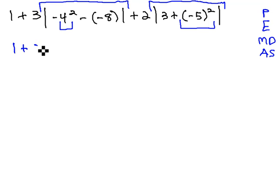So, we now have 1 plus 3, absolute value of the opposite of 4 squared, which is 16, minus negative 8, plus 2, absolute value of 3 plus, and now we square the whole thing, negative 5 squared is 25.